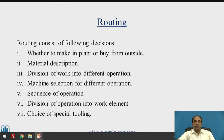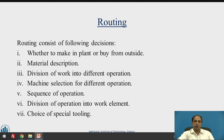When we talk about routing, it consists of some major decisions. The first is make or buy — whether to manufacture inside the organization or procure from an outside agency through outsourcing. The second is material description — what material is involved in the specifications. After material is specified, we divide the work into different operations, and then perform machine selection for those operations, allocating the job into smaller operations and deciding which machines are required.